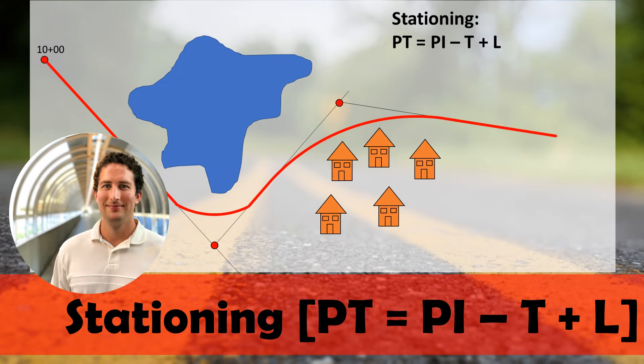One of the most common mistakes when working horizontal alignment problems is related to the stationing, and we're going to focus on that in this video. For the proper stationing, if we're looking for the point of tangency, the station of the point of tangency equals the PI minus the tangent length T, plus the length of the curve L. This puts us along the center line of the roadway along the curve.